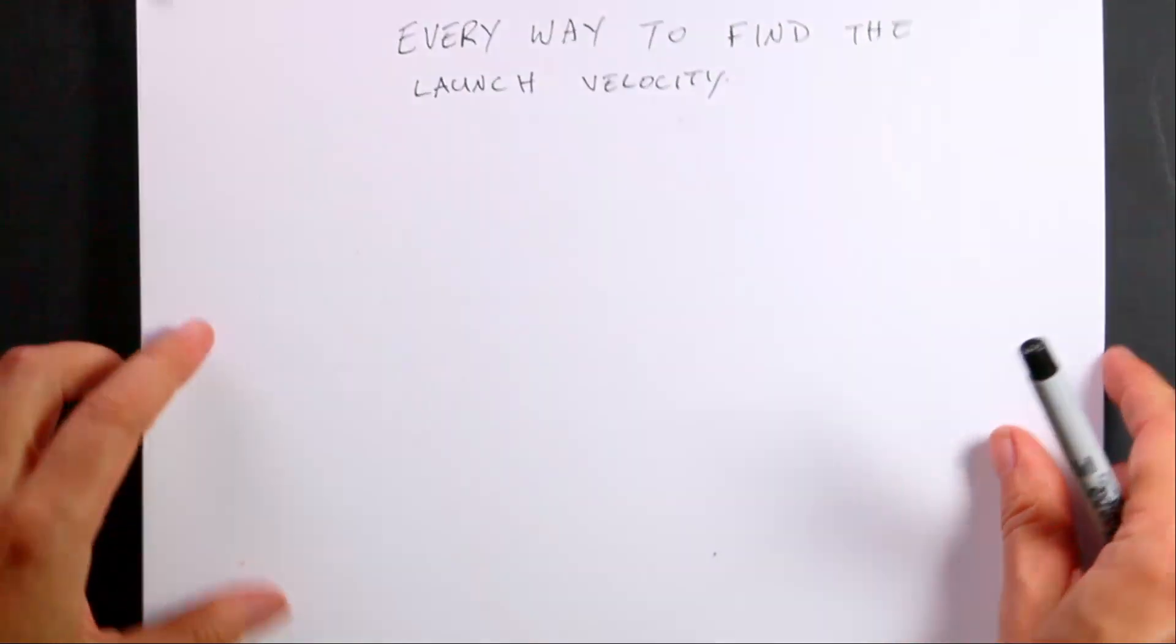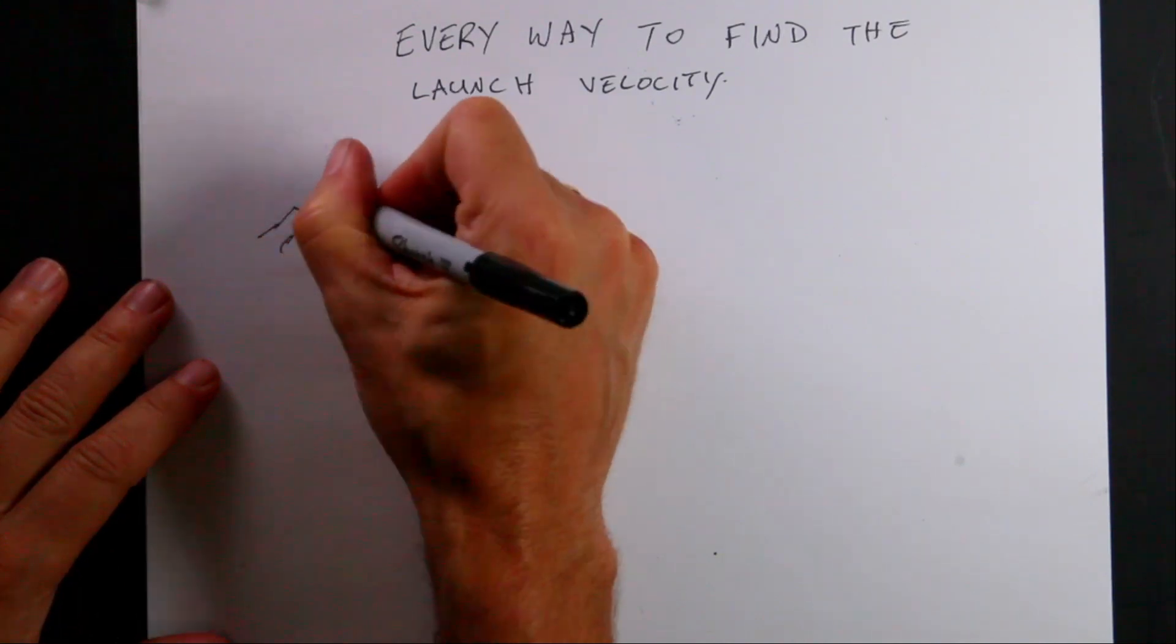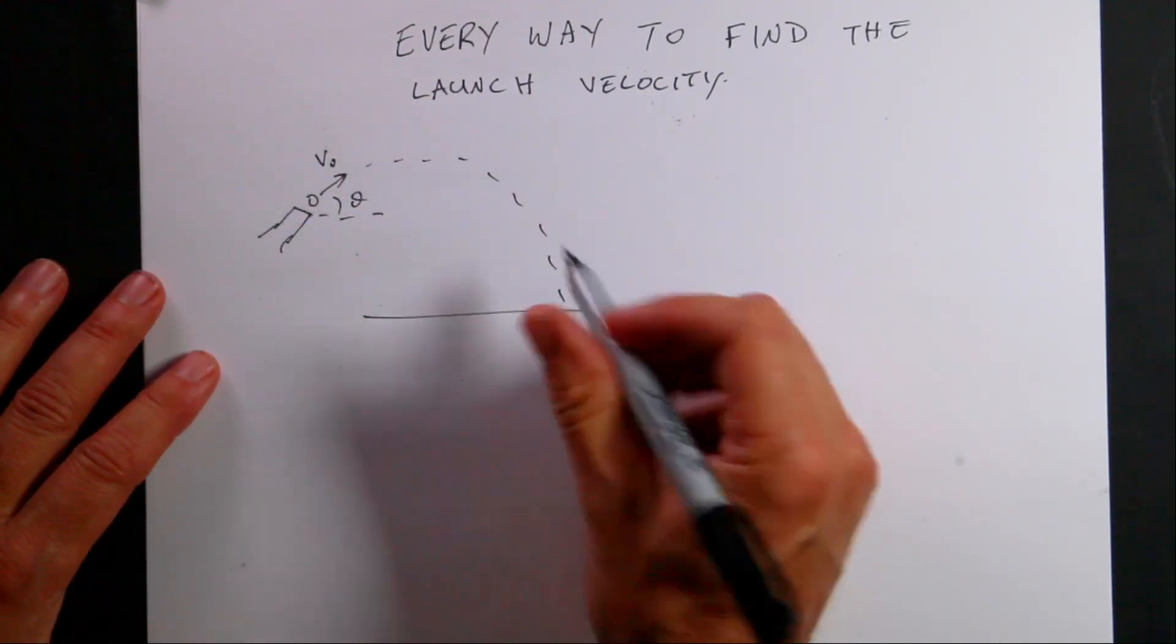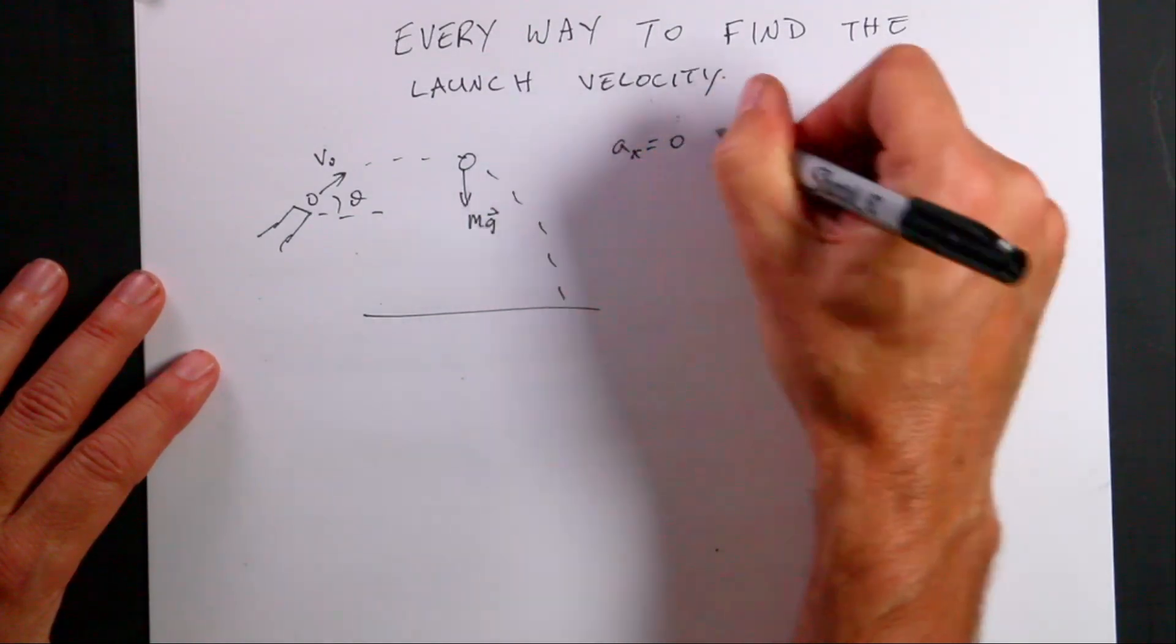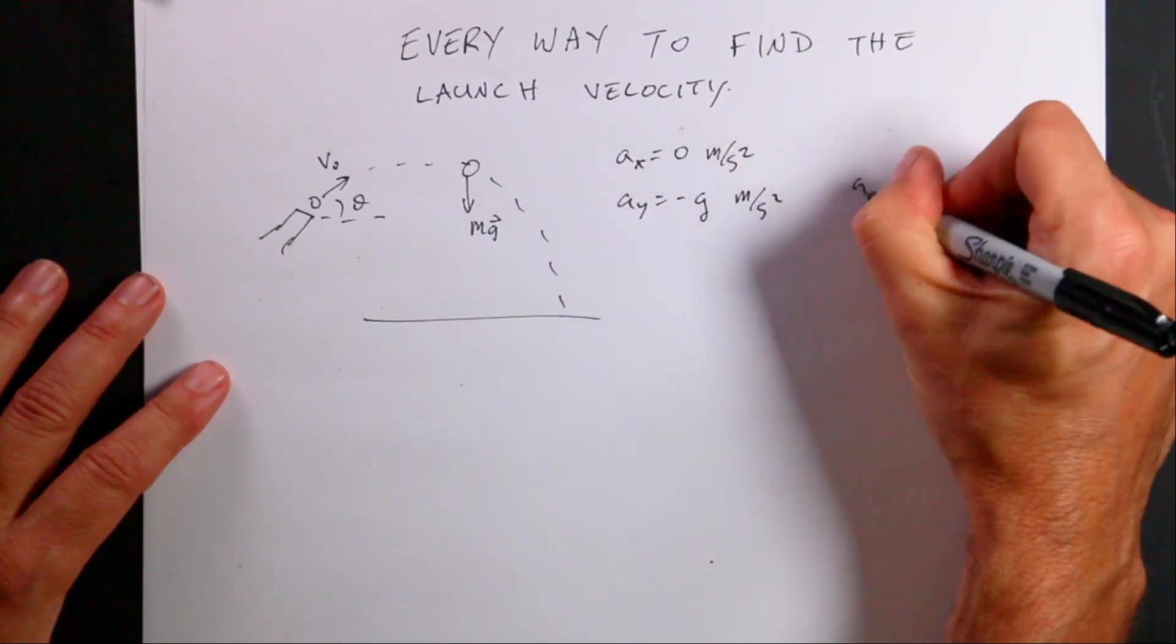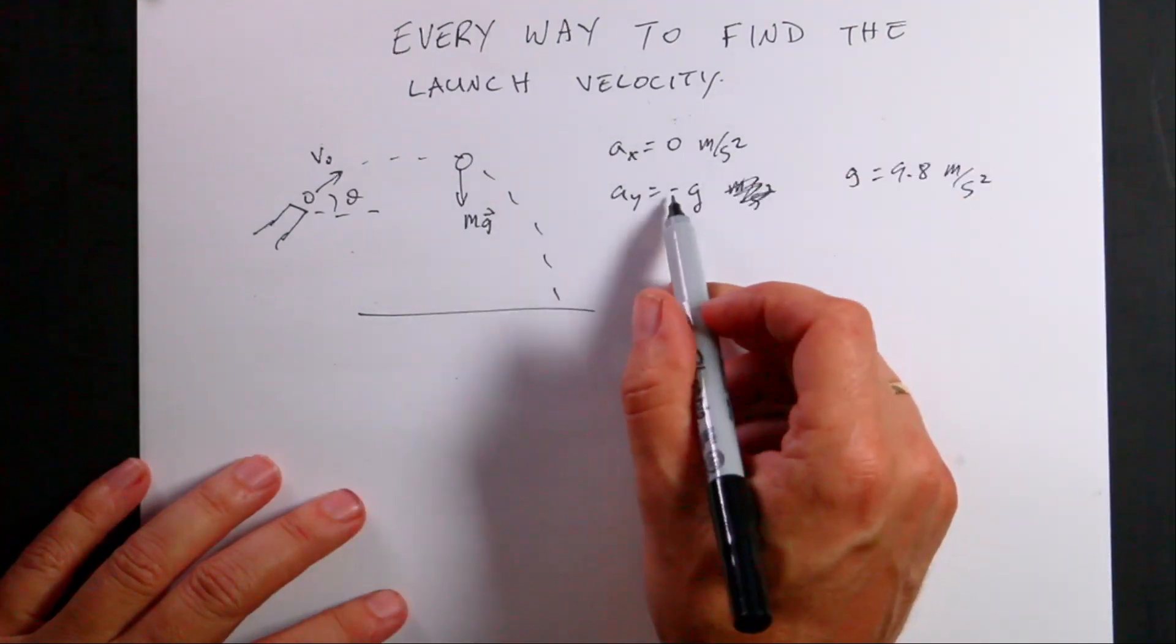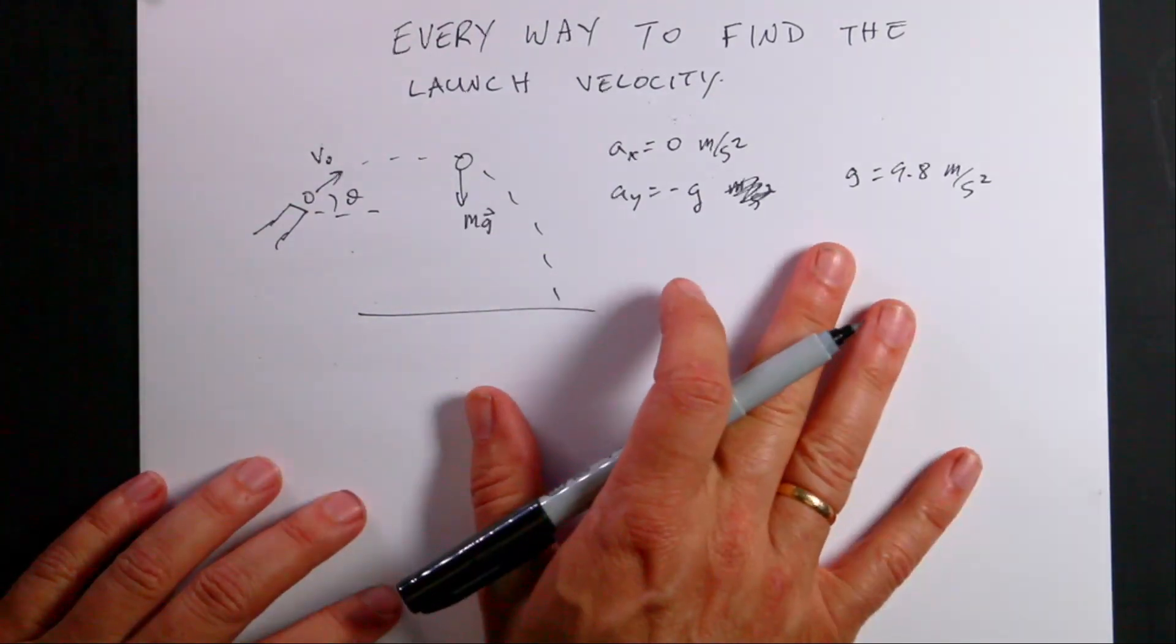Okay, so how about a brief projectile motion review. So if I have a launcher and I shoot some ball with a velocity V0 at some angle theta above the horizontal, then once it leaves that launcher and until it hits the ground, the only force acting on it is the gravitational force. That means that the acceleration in the X direction is zero meters per second squared. The acceleration in the Y direction is negative G meters per second squared, where G is 9.8. We call G the magnitude of the gravitational field vector. So that's why it's negative. The Y component is negative. But when we just write G without the vector over it, then it's just 9.8's magnitude.